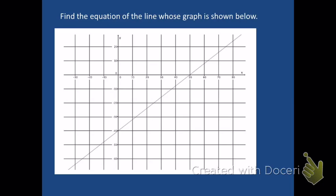I'd like to work through one more example. Looking at this line, we want to write its equation. We're going to find some good points — I'll use the y-intercept and then find another point that crosses grid lines. What I want you to notice on this graph especially is the scale. I no longer have a scale where every line counts for 1. These are going up by 10s on both the horizontal and vertical axes. We're going to take that into account when we find the slope.